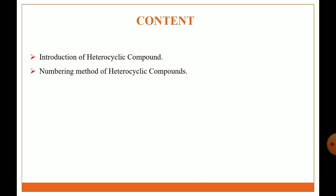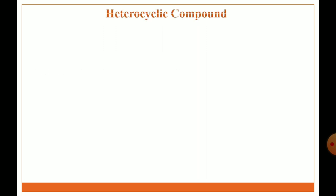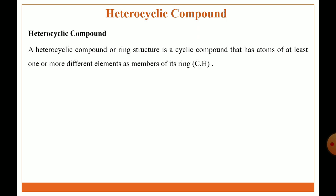What is a heterocyclic compound? A heterocyclic compound or ring structure is a cyclic compound that has an atom of at least one or more different elements as a member of its ring — that means other than carbon and hydrogen. The heteroatoms are oxygen, nitrogen, sulfur, and fluorine.